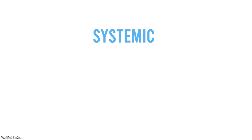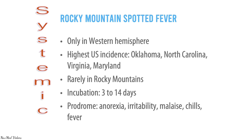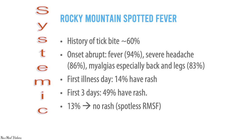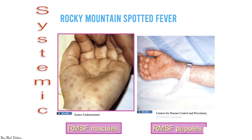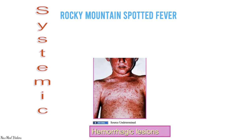Rocky Mountain spotted fever is only seen in the western hemisphere; highest U.S. incidence is in Oklahoma, North Carolina, Virginia, and Maryland — rarely in the Rocky Mountains. Incubation is 3–14 days. It is preceded by anorexia, irritability, malaise, chills, and fever. There is a history of tick bite in 60% of cases; onset is abrupt with severe headache and myalgias especially in the back and legs. 14% have rash in the first three days, 49% develop rash later, and 13% have no rash. Early lesions are 2–6 mm pink blanchable macules that evolve to deep red papules, then become hemorrhagic and non-blanchable within 2–4 days.